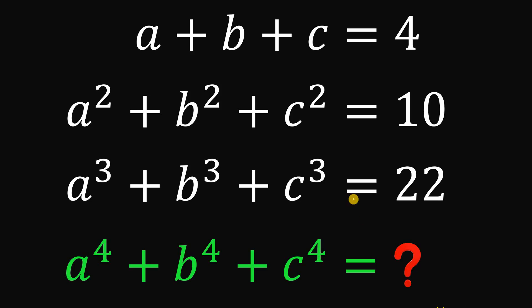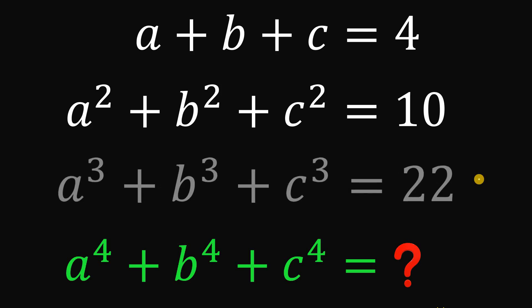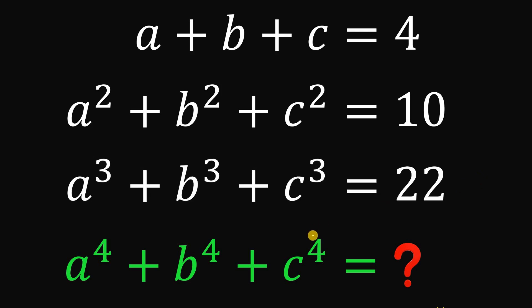Today we will answer a math challenge given by one of our followers. It says that this is the hardest algebra problem. Here's the question: given three equations — a plus b plus c equals 4, a squared plus b squared plus c squared equals 10, and a cubed plus b cubed plus c cubed equals 22 — the goal is to find the numerical value of a raised to the fourth power plus b raised to the fourth power plus c raised to the fourth power.